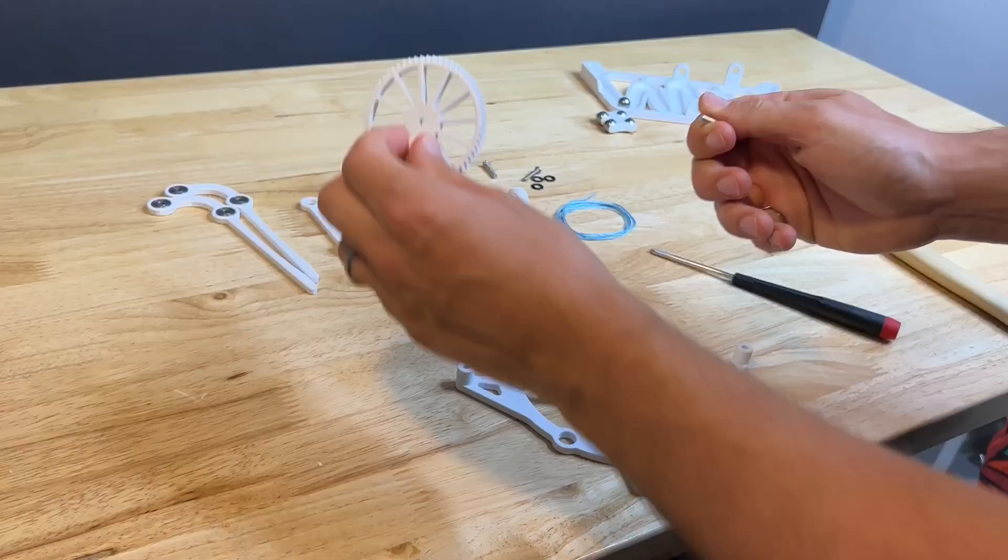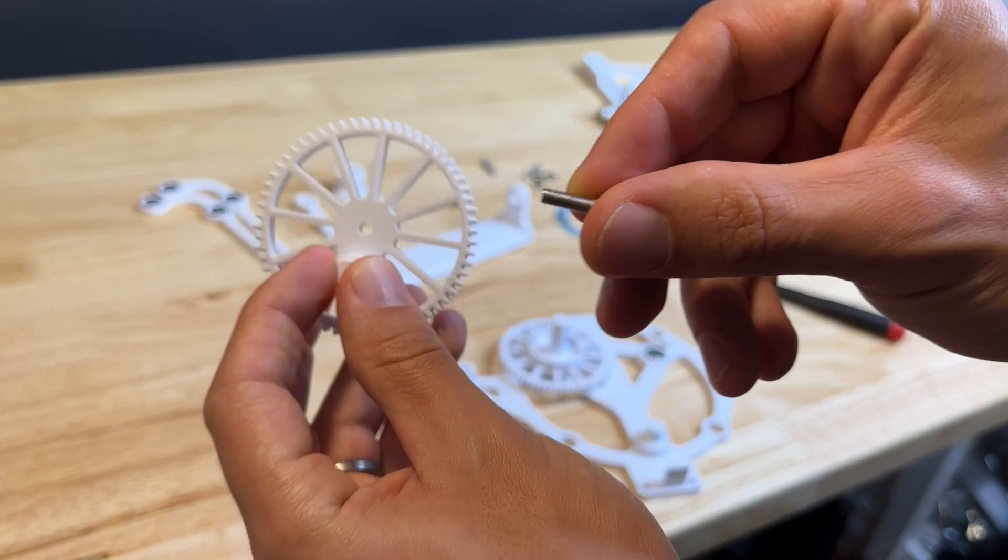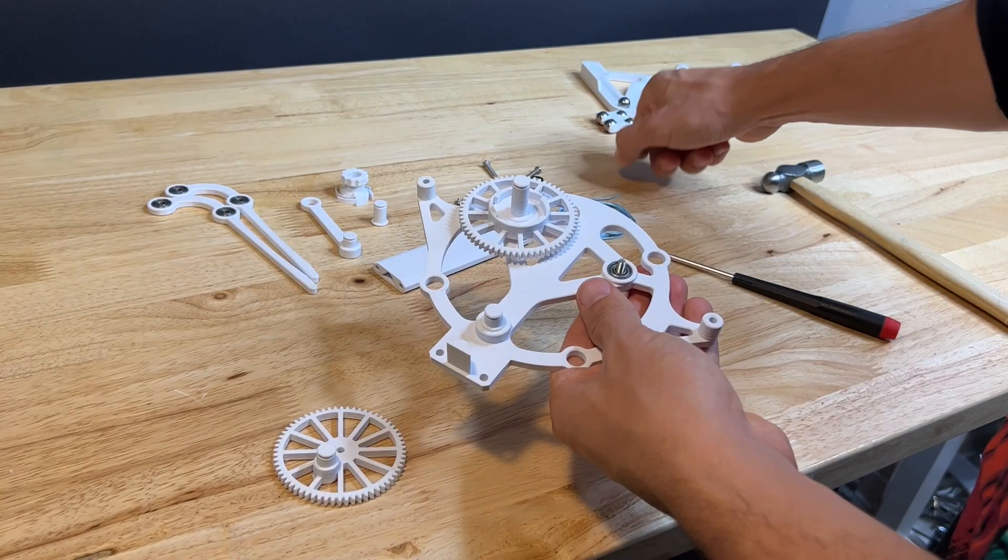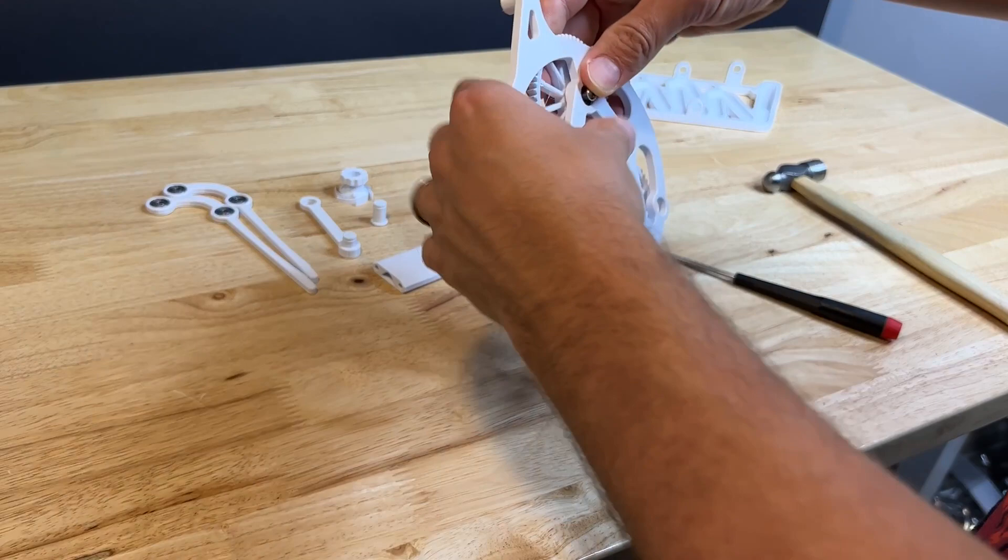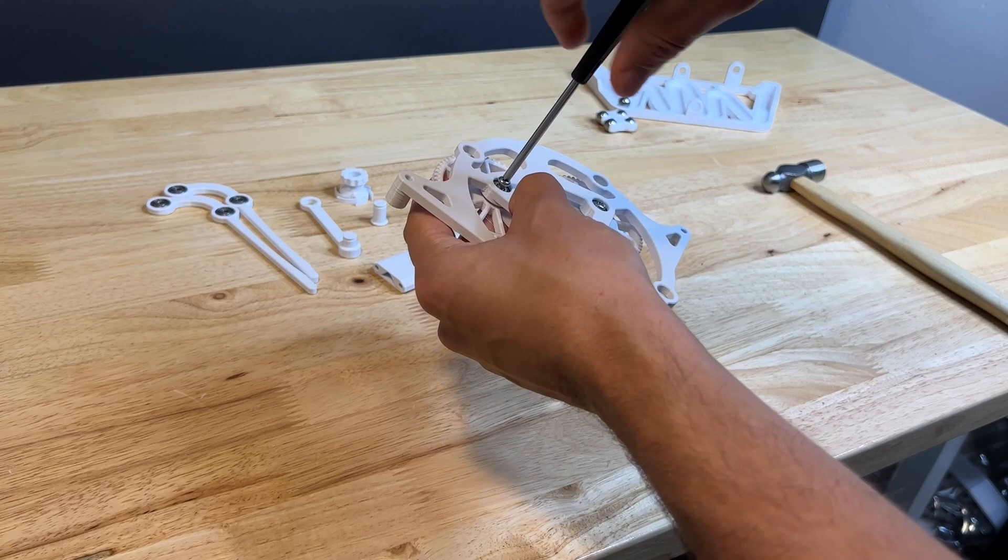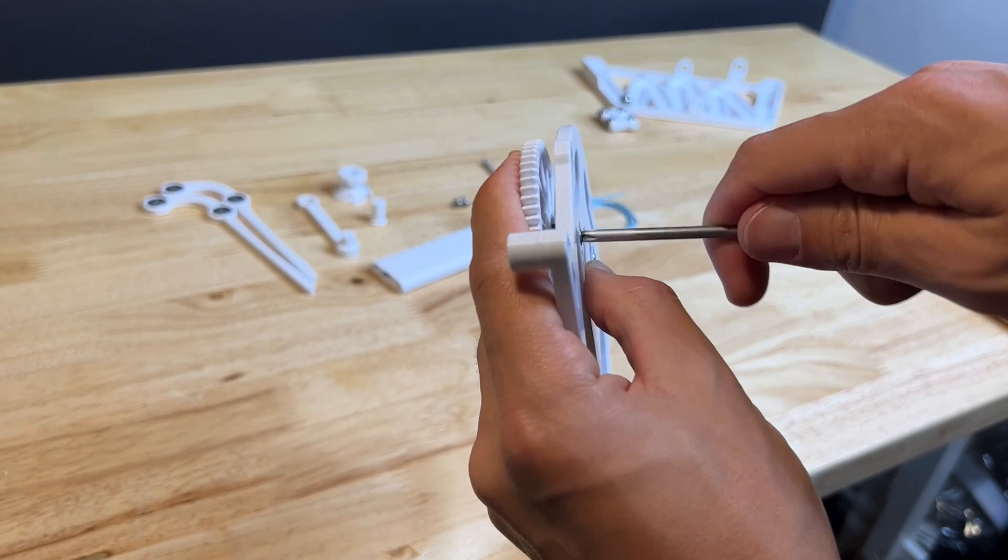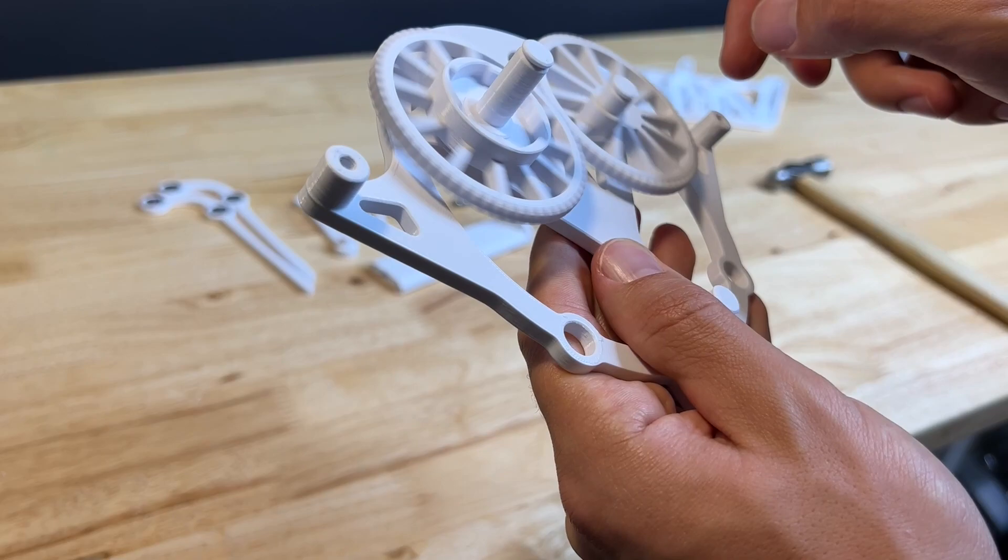Now we're going to repeat the same thing with another M4 by 12 millimeter screw on the other side. Throw two washers onto the end of that and then screw that into the other gear. Try to make sure that the gear is going on as straight as possible. You can see my gear has a little bit of wobble on it, which is not ideal, but it will work.